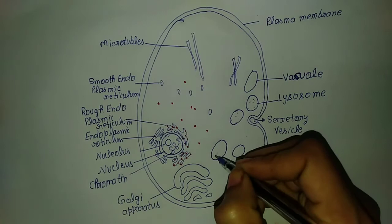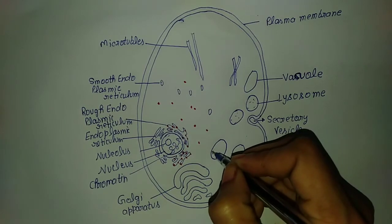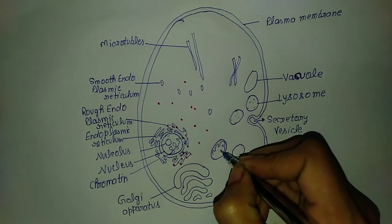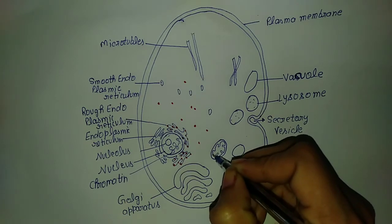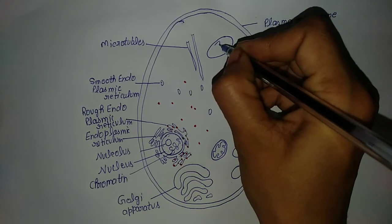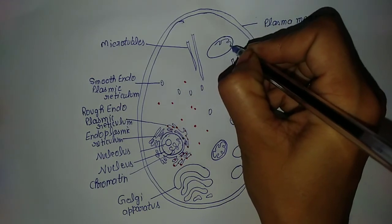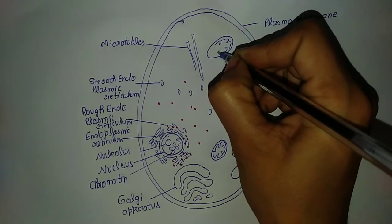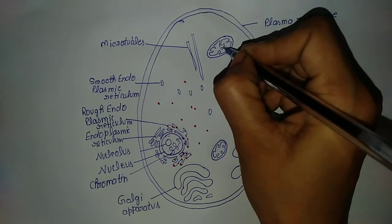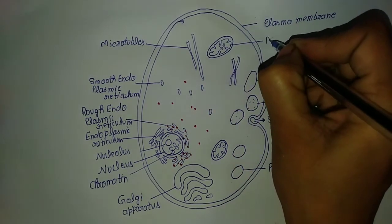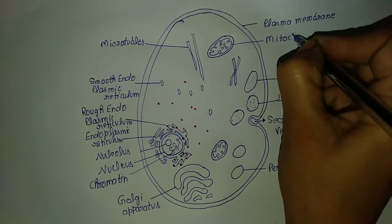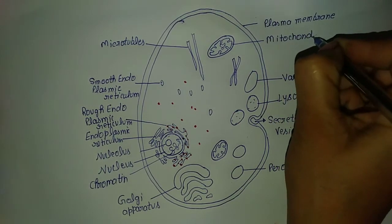This is the mitochondria. The mitochondria is a double-layered structure. Inside the mitochondria there is a finger-like structure, and DNA is present in the mitochondria. Mitochondria is called the powerhouse of the cell because it is responsible for the formation of energy.